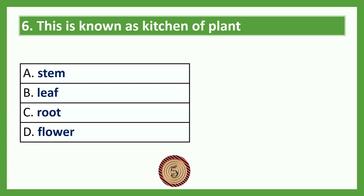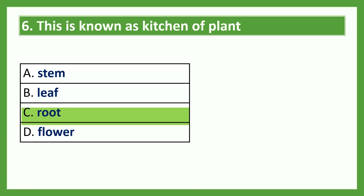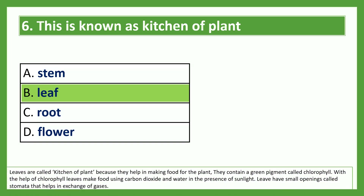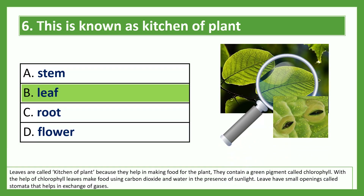The answer is leaf. Leaves are called the kitchen of the plant because they help in making food for the plant. They contain a green pigment called chlorophyll. With the help of chlorophyll, leaves make food using carbon dioxide and water in the presence of sunlight. Leaves have small openings called stomata that help in exchange of gases.